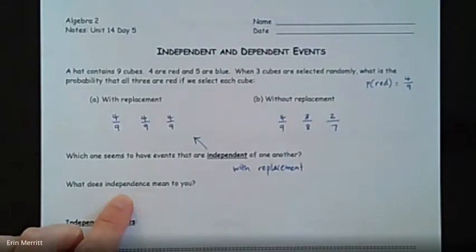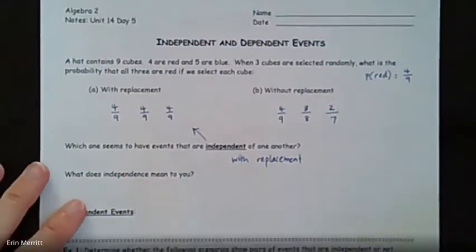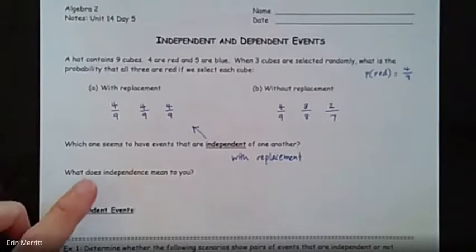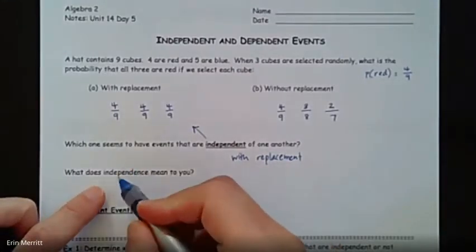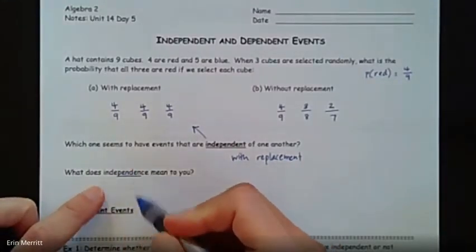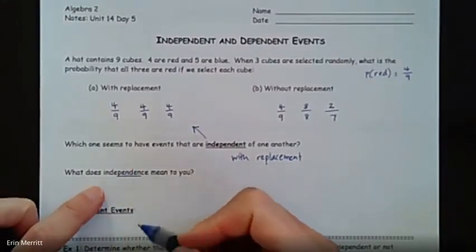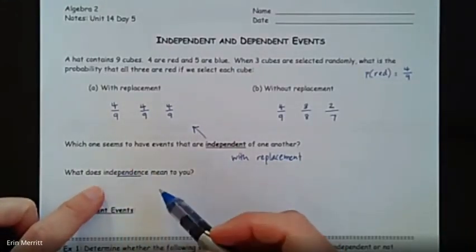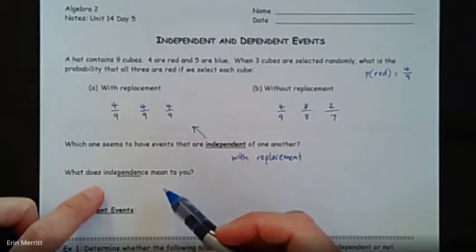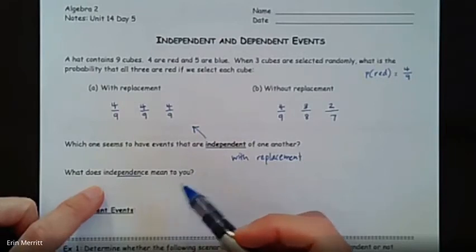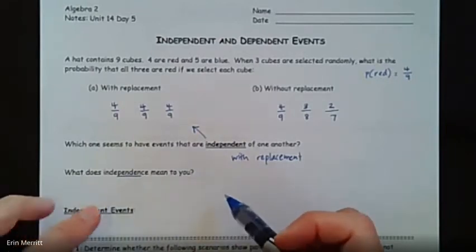And then what does independence mean? In this case, what independence should mean is that one event does not affect the probability of the next.